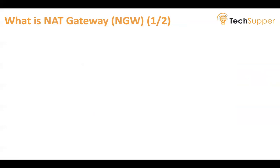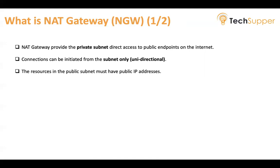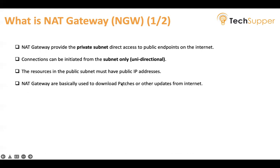The second gateway is NAT Gateway. NAT Gateway allows your private subnet resources to communicate with public endpoints on the internet, and it is unidirectional — meaning traffic can only be initiated from the subnet. Internet users cannot send traffic to your OCI resources in the private subnet. NAT Gateway is basically used to download patches or other updates from the internet.